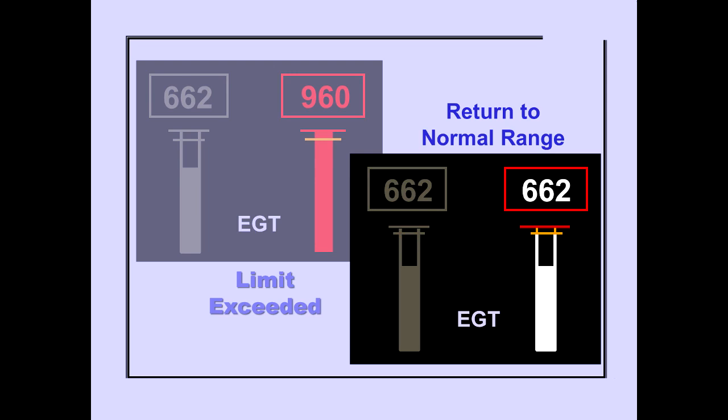When the parameter which caused an operating limit exceedance returns to its normal operating range, only the box surrounding the digital indicator remains red.